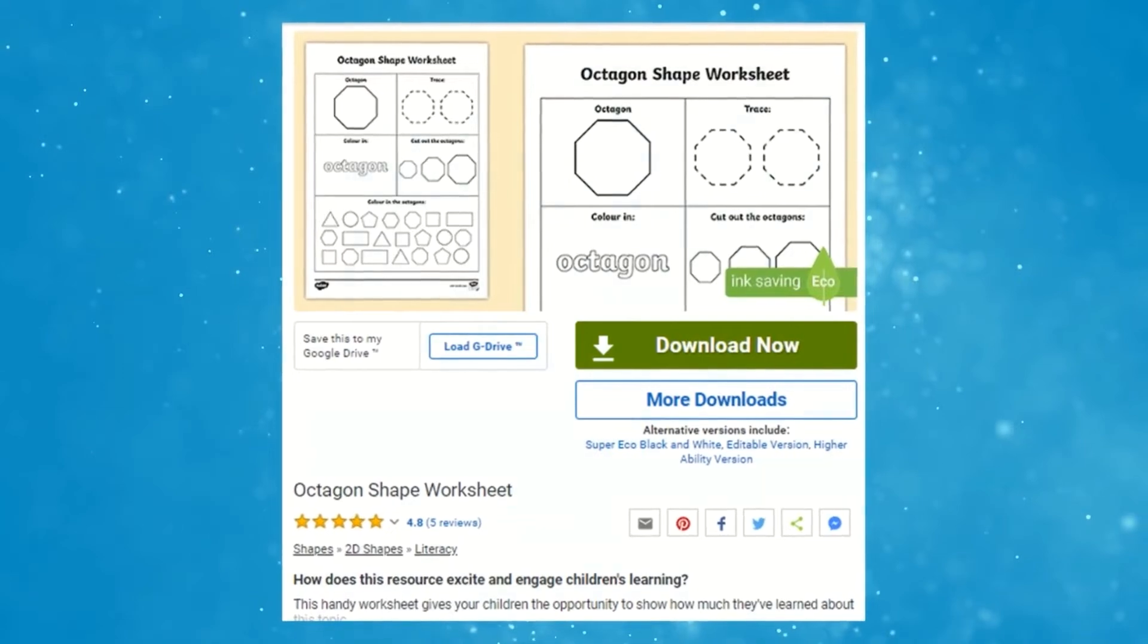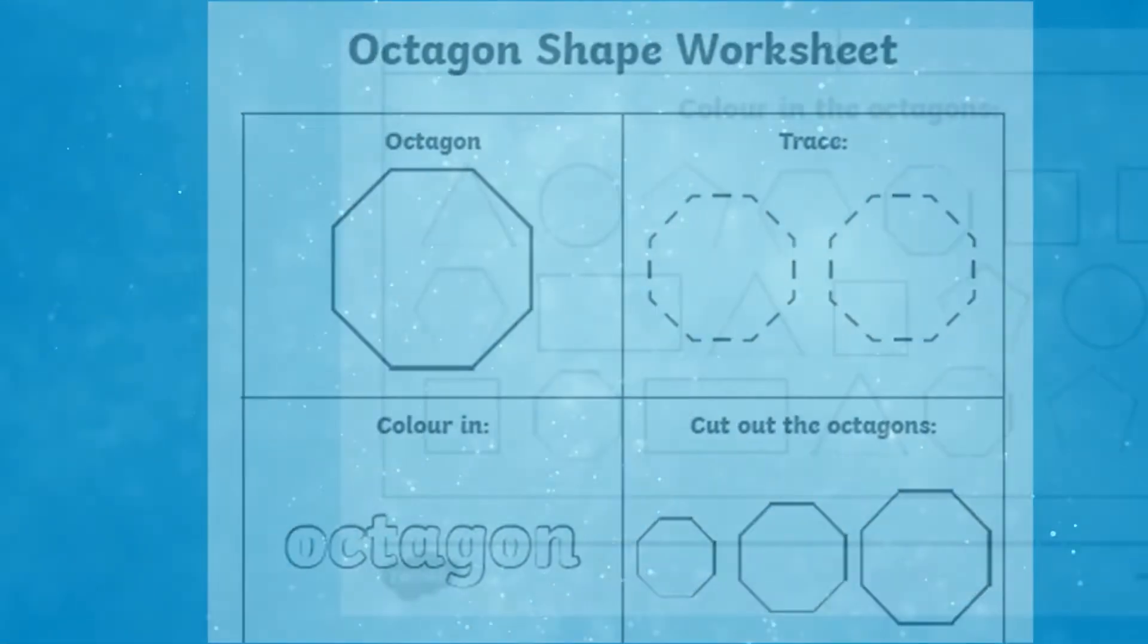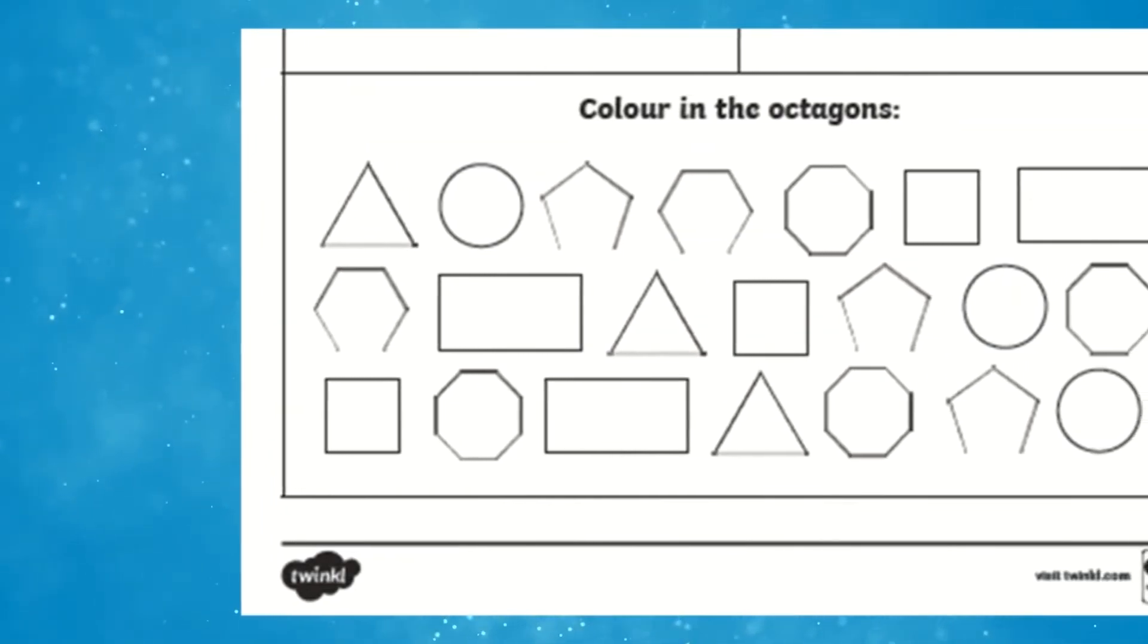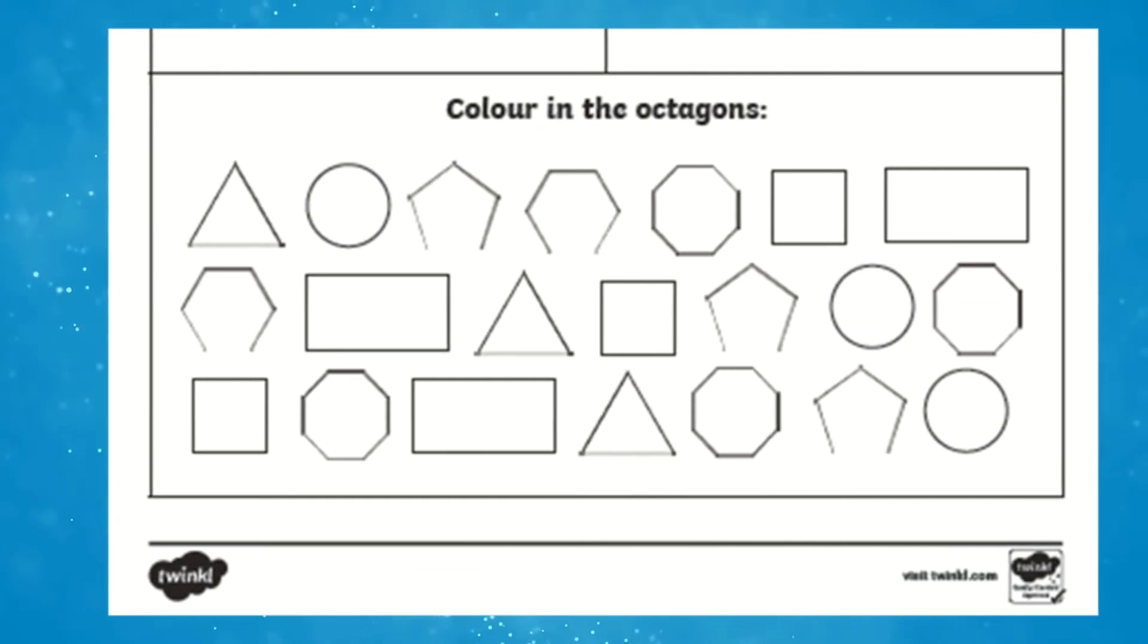This handy worksheet gives your children the opportunity to show what they have learned about octagons. It gives your early learners the practice to become more familiar with how they look, how many sides, angles and vertices they have and also how to spot them.